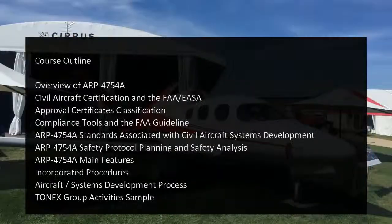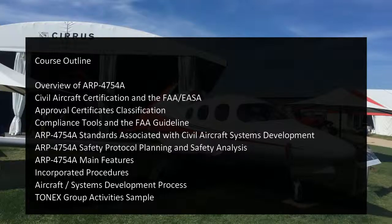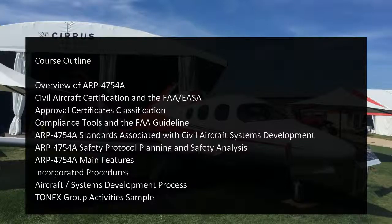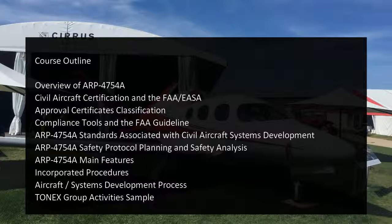Course outline: Overview of ARP 4754A. Civil aircraft certification in the FAA and EASA. Approval certificates classification, compliance tools and the FAA guideline. ARP 4754A standards associated with civil aircraft systems development. Safety protocol planning and safety analysis. ARP 4754A main features, incorporated procedures, and aircraft systems development process.